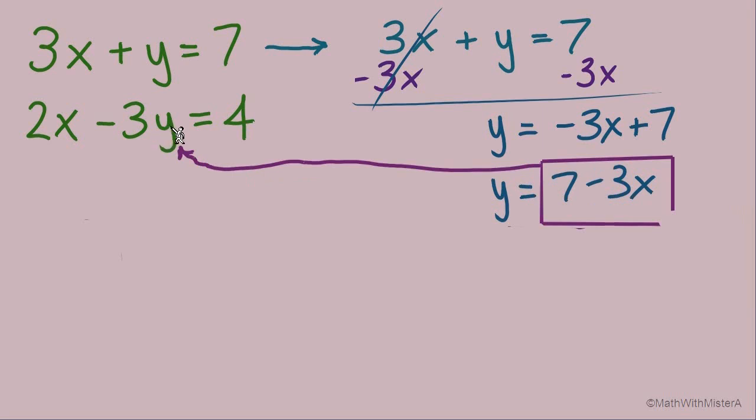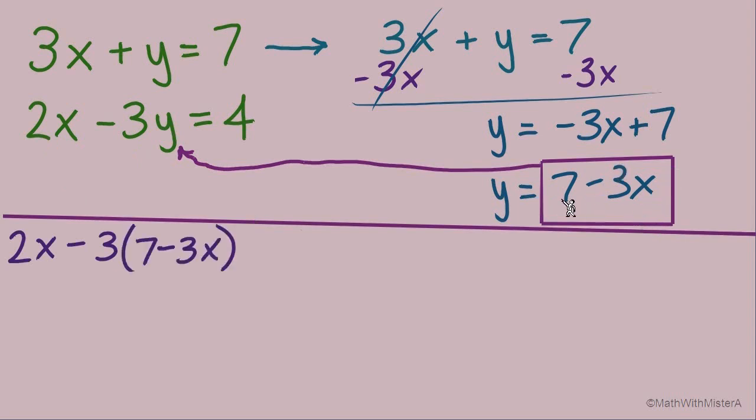So we're needing to substitute it into the y right there. And let's make some space and carefully recopy. 2x minus 3 times, in place of y, I'll go ahead and use the 7 minus 3x, equals 4. Now we have a careful distribute because we have a negative 3 coefficient. So 2x minus 21 and then the negative 3 times negative 3x will make a positive 9x equals 4. Careful with the distribute there.